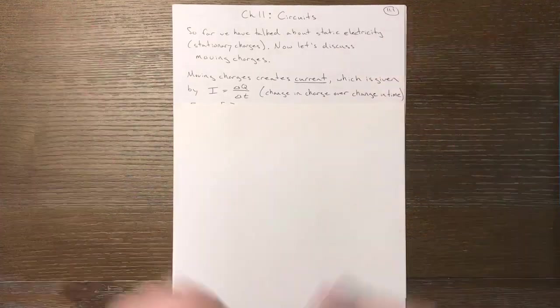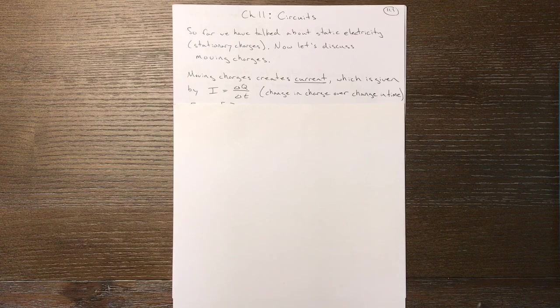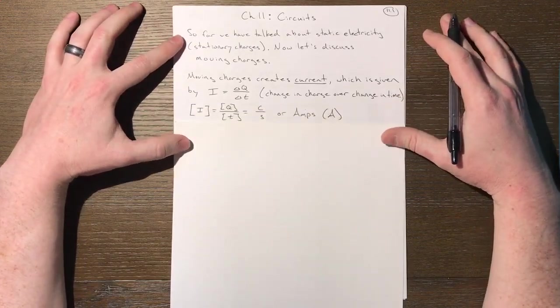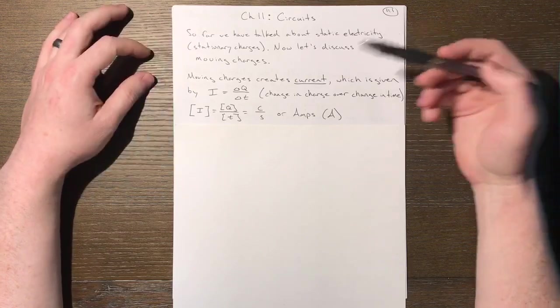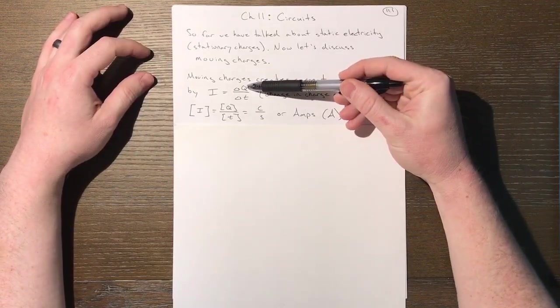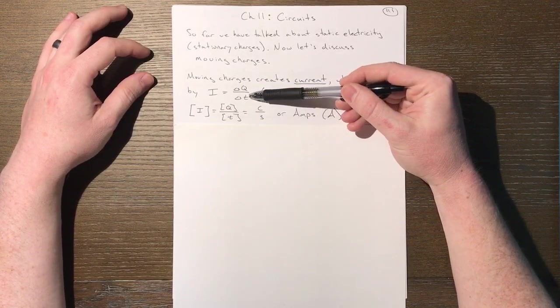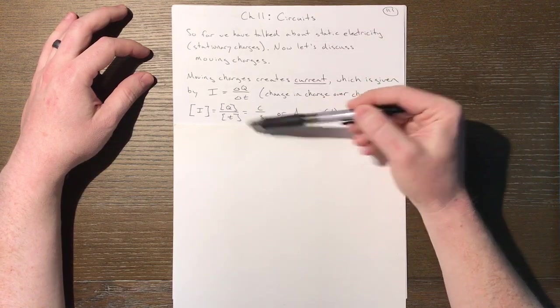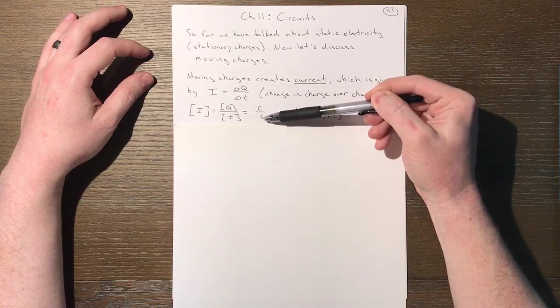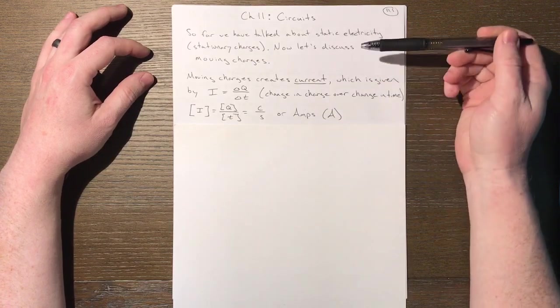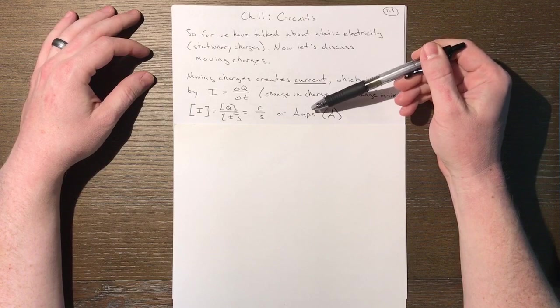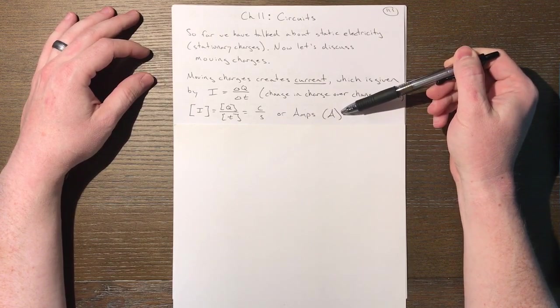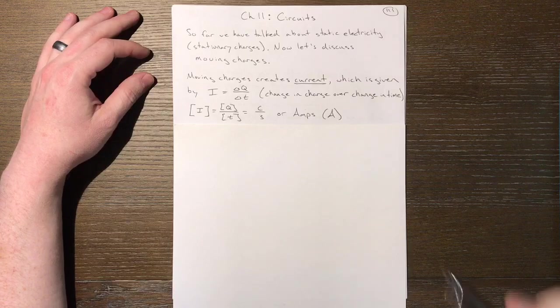If you look at the units of current, we know the units of charge are coulombs and time is seconds. So current, charge over time, has units of coulombs per second, which has a special name: the ampere or amps, abbreviated with capital A. You've probably heard of amps before; it's the fundamental unit for current.